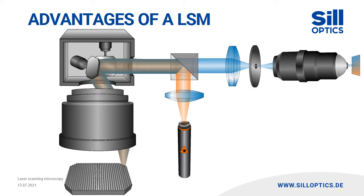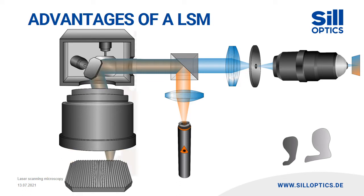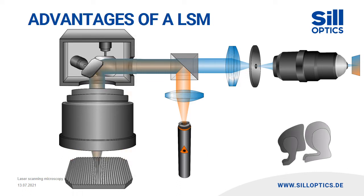While conventional light microscopes image the entire surface of the sample, the laser scanning microscope images only a single point and scans the sample. This enables a significantly higher resolution. The pinhole vignets stray light from other focal positions, so only one particular spot is imaged.